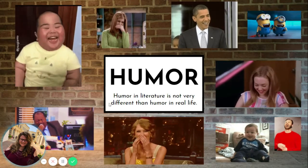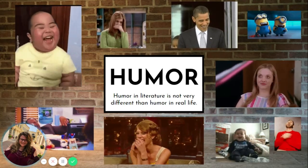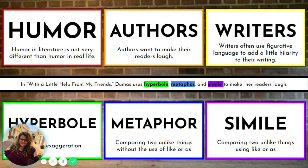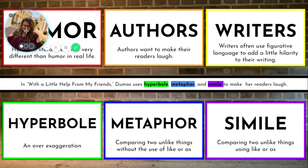Humor in literature is not very different than humor in real life. Authors are going to want to make their readers laugh, and they will often use figurative language to add a little hilarity into their writing. In the text you will be reading today, called 'With a Little Help from My Friends,' the author uses hyperbole, metaphor, and simile to make her readers laugh.